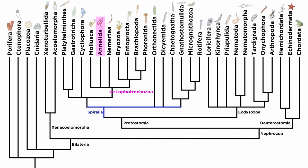With that we wrap up the segmented worms of phylum Annelida. Let's move forward and examine the ribbon worms of phylum Nemertea next.